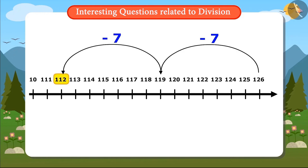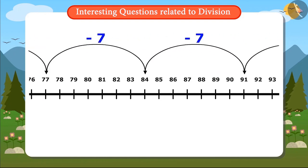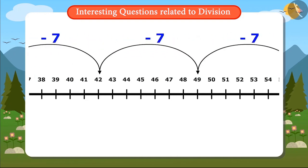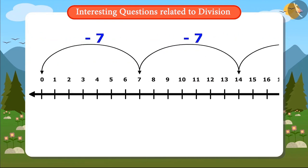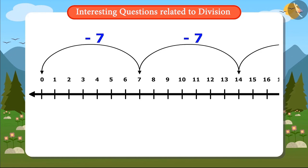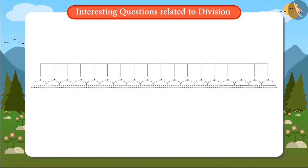Likewise, I will keep subtracting 7 on this number line till I don't reach the figure 0. So once I reach the digit 0, that will mean all my pocket money is spent. Now I just want to see how many times 7 had to be reduced to reach 0.